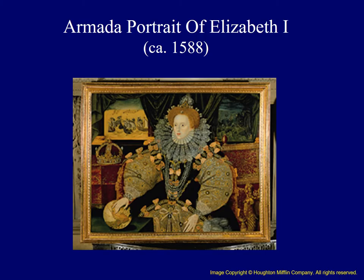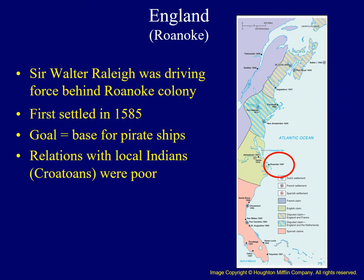Raleigh chose to name the geographic region he was settling Virginia, in honor of Queen Elizabeth, who ruled England for most of the latter half of the 16th century. She was described by many as the Virgin Queen because she never married. Roanoke was first settled in 1585, with colonists including a large contingent of soldiers. The colony had a unique purpose — to serve as a base for pirate ships located just north of the Spanish in Florida to enable privateers to attack Spanish ships. Relations with local Indians were rocky at best, even though the English relied on them for food.